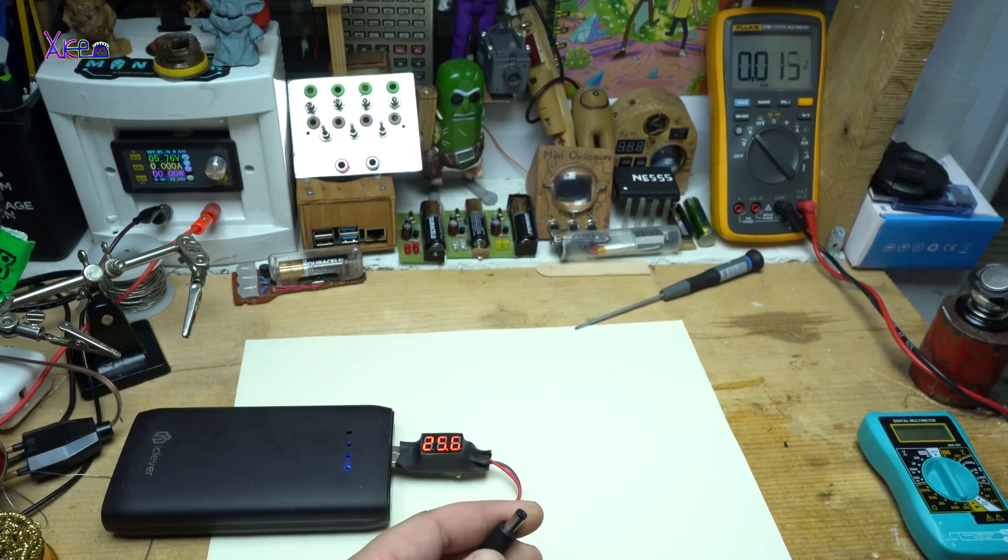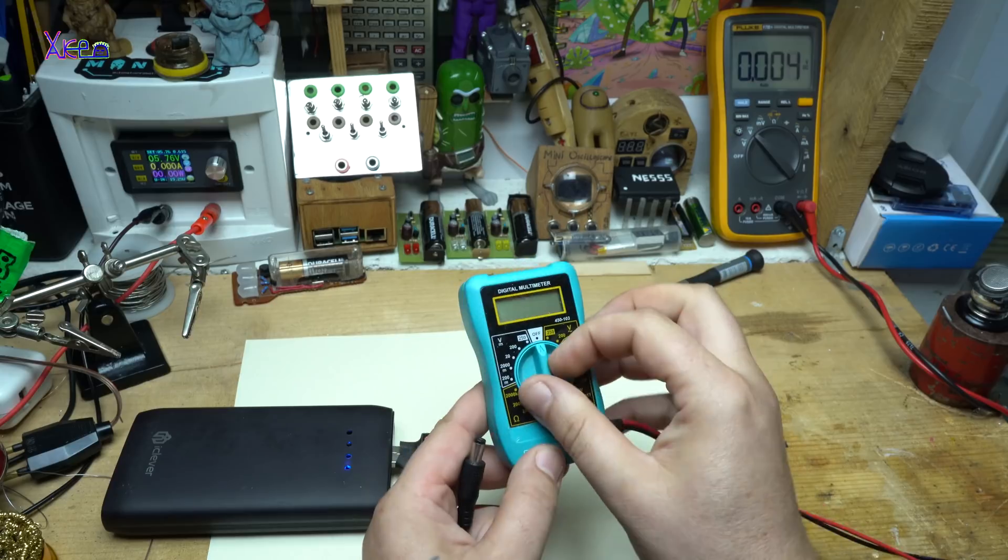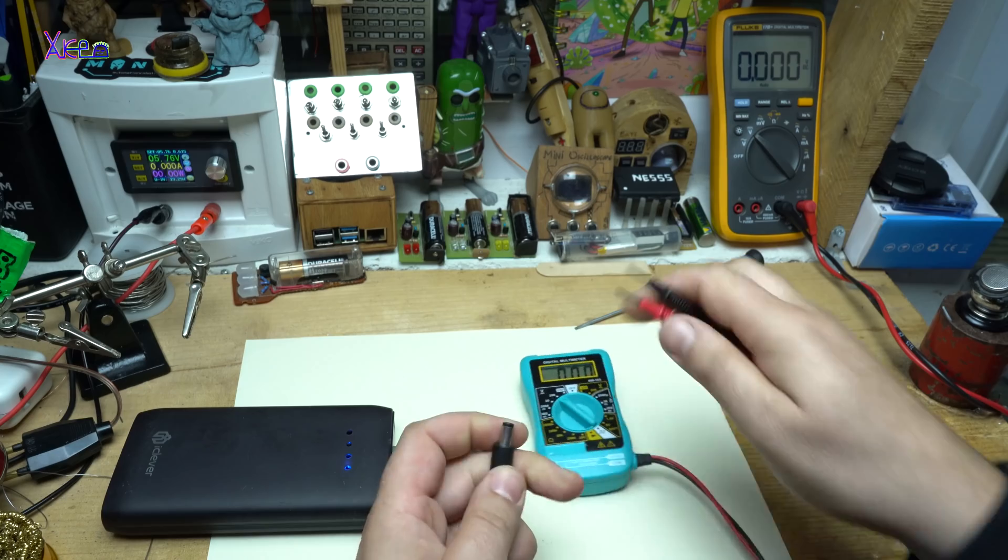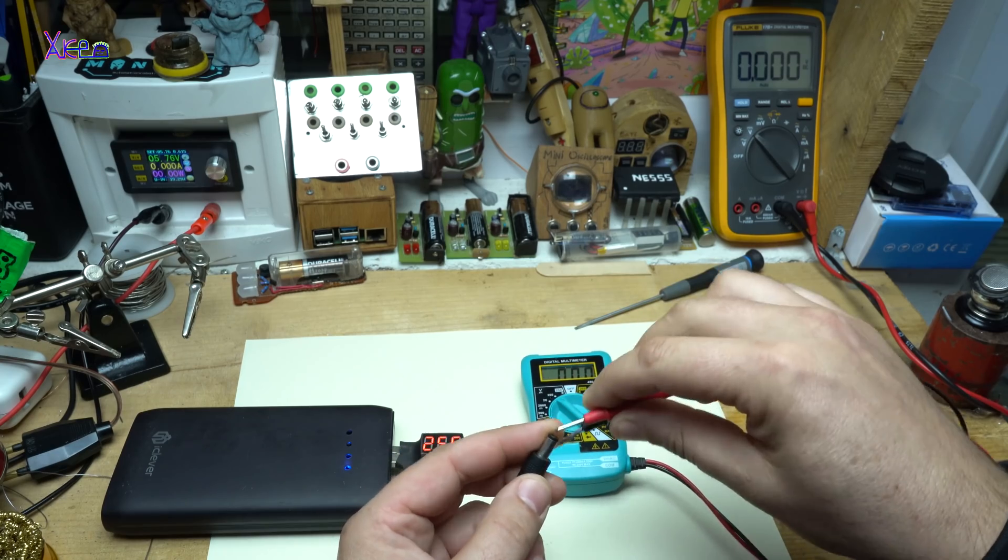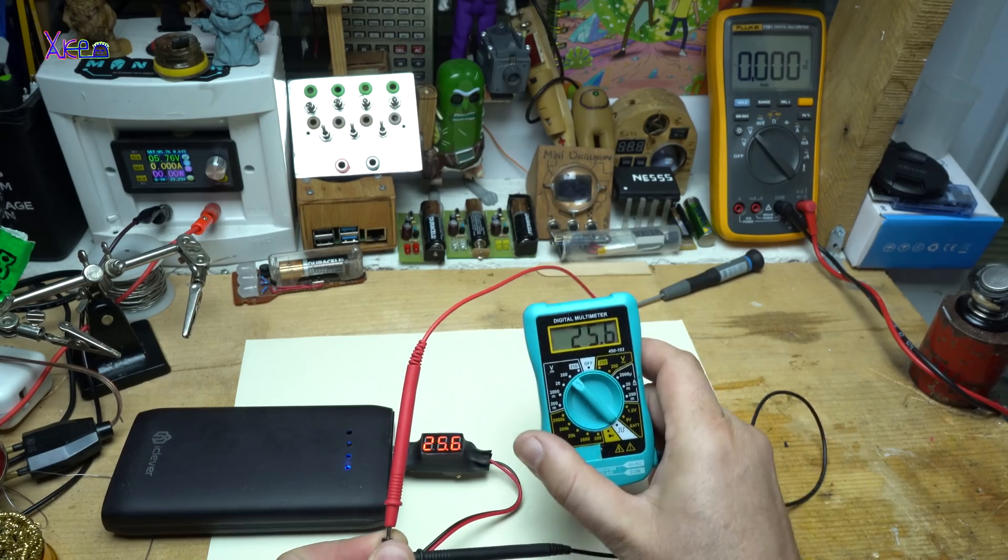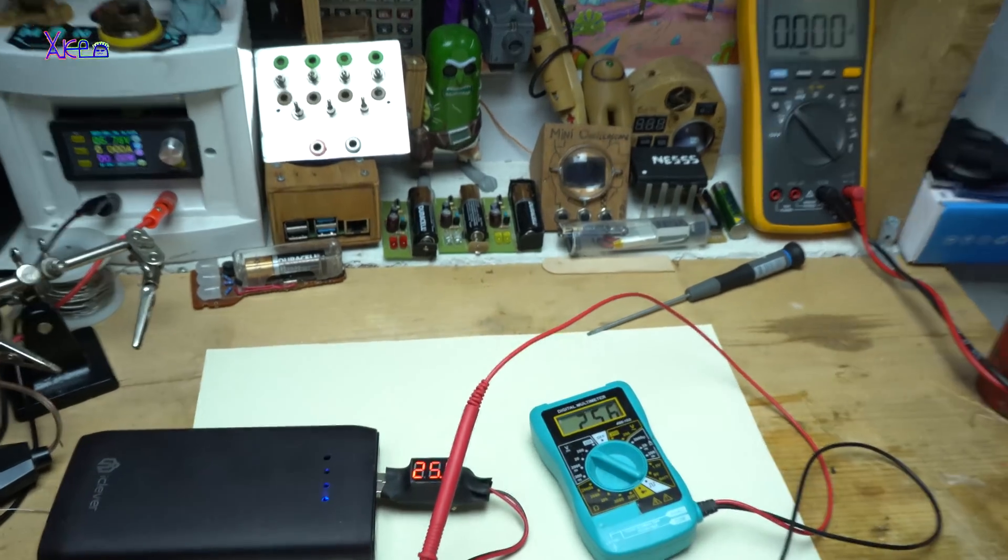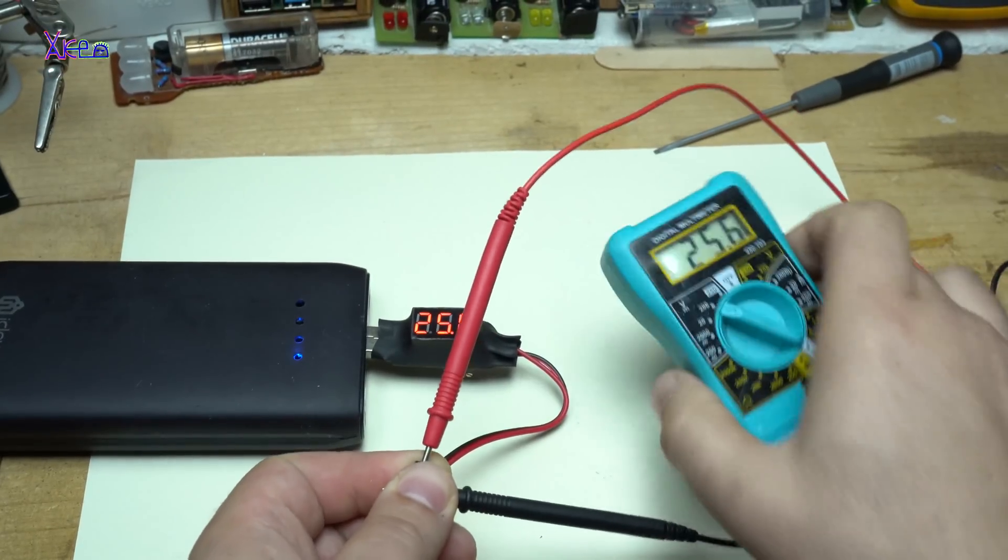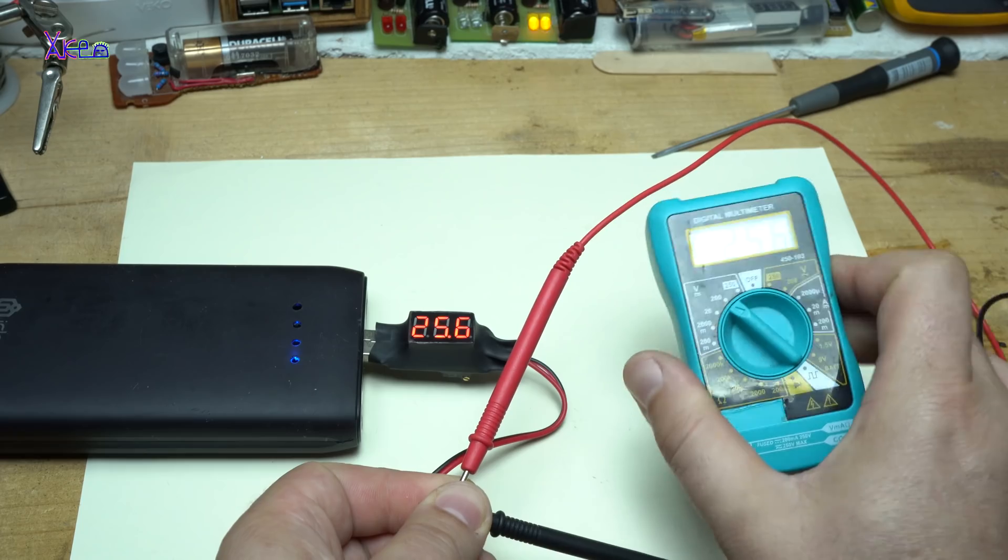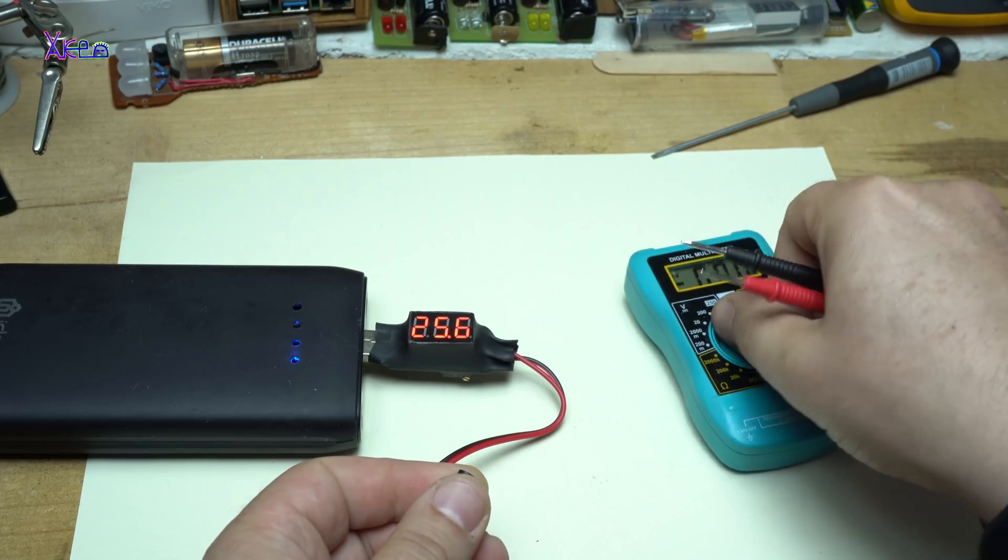If you can't believe it, I can measure with this tiny voltmeter. You set it on 200, positive, negative. 25.6 volts. Okay.